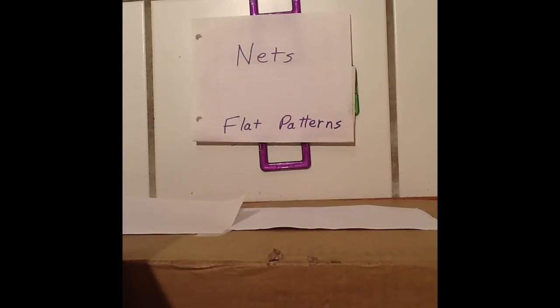Hello geometricians, we're heading into the final stretch. We're starting chapters 12 and 13, which are three-dimensional geometry properties. We're going to be talking about surface area and volume. But before we get into that, I want to talk a little bit about nets.